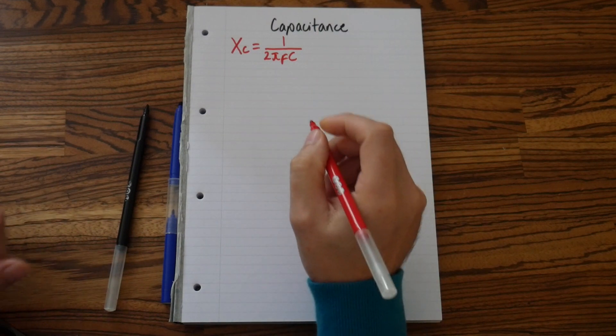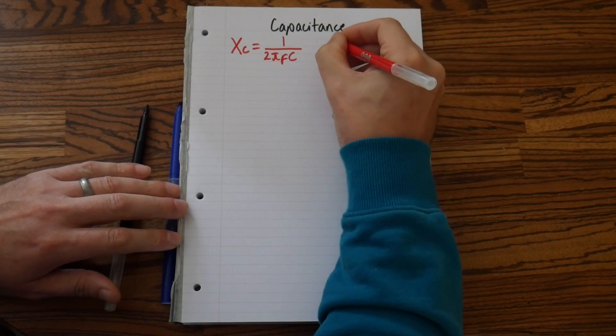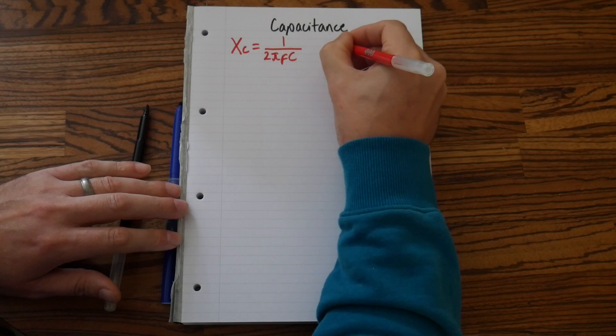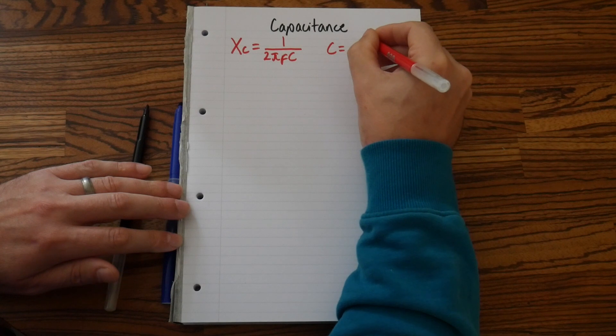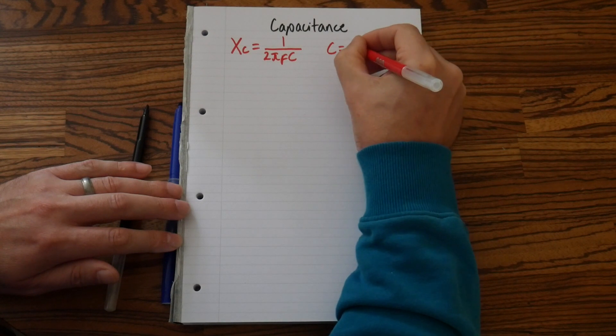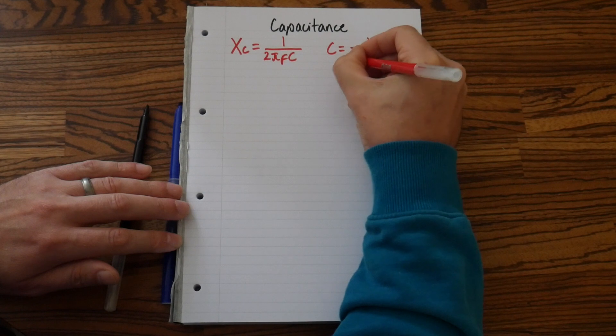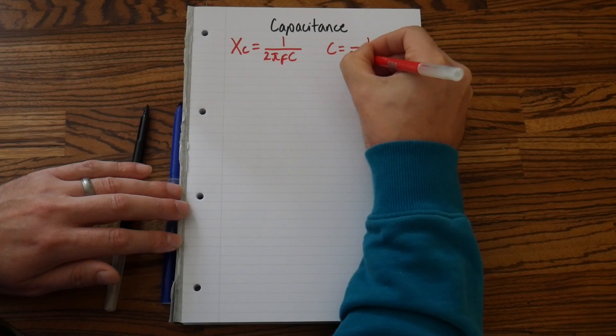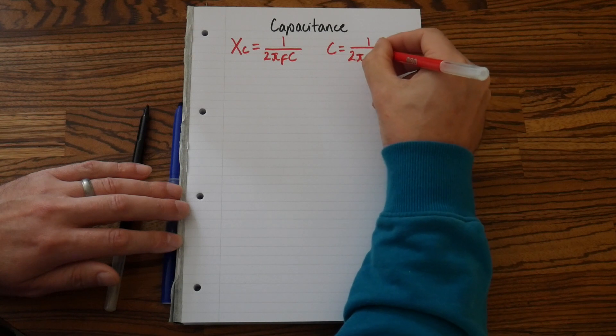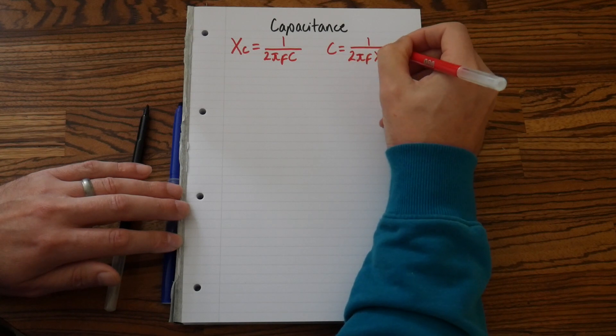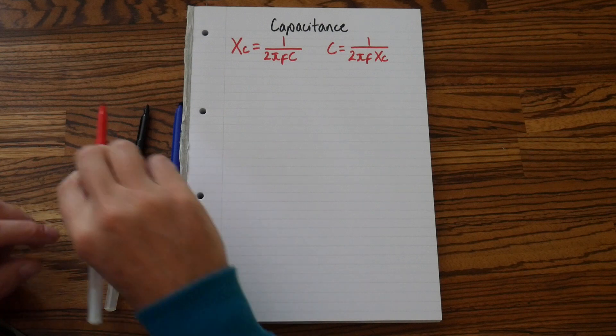And we can transpose that to then give us C equals, and again that would be 1 over 2πfXc. And they are the two formulas.